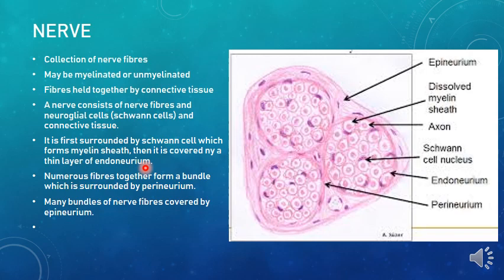The endoneurium is a connective tissue made up of delicate collagen fibers, formed by fibroblast cells. On higher magnification you will see very delicate collagen fibers as well as fibroblast nuclei. At light microscopy level, the endoneurium shows the nuclei of fibroblasts, but you can't distinguish them from the nerve fibers separately on low magnification. Each nerve fiber is surrounded first by myelin sheath, and then by the endoneurium.